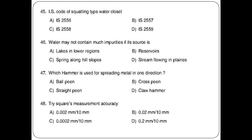IS code of squirting type water closets — options: IS2556, IS2557, IS2558, IS2559. The answer is option A: IS2556. Water may not contain much impurities if its source is — options: lake in low margins, reservoirs, spring along hill slope, stream flowing in plains. The answer is option C: spring along hill slopes.